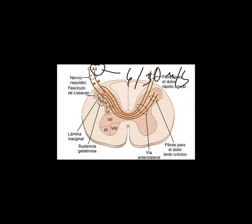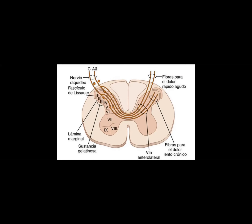Las fibras C llevan el dolor lento crónico hasta la médula espinal a una velocidad de 0.5 a 2 metros por segundo. La estimulación prolongada de las fibras tipo C produce un dolor intolerable y crónico, que incluso ha llevado a algunos individuos a optar por el suicidio.